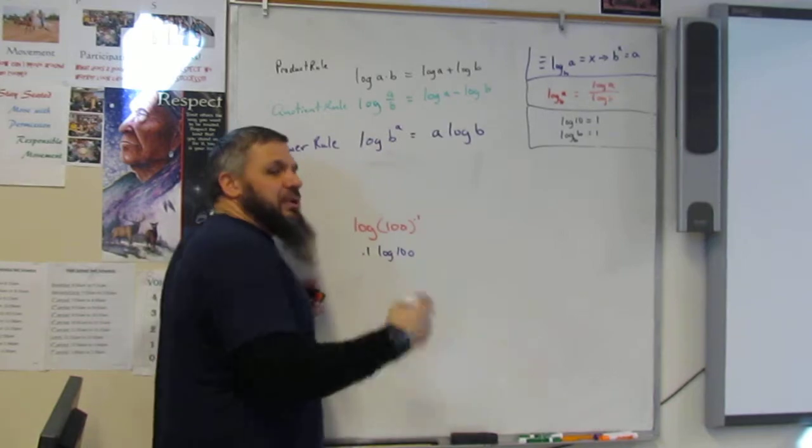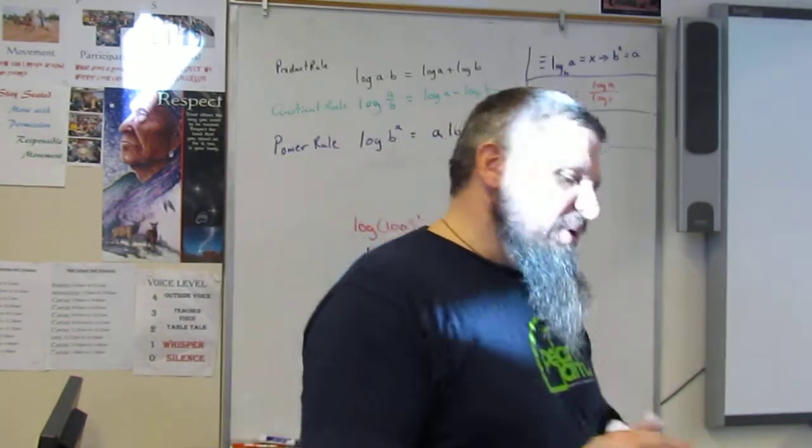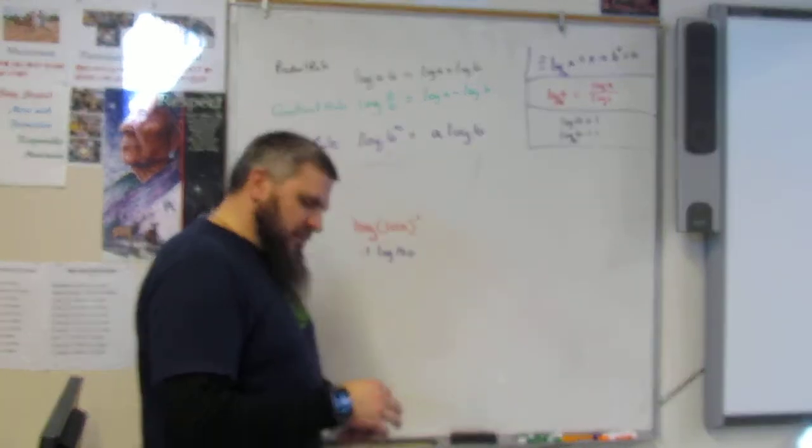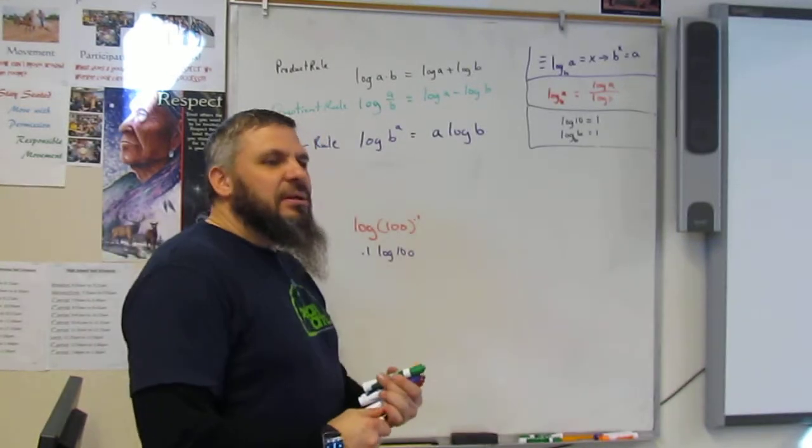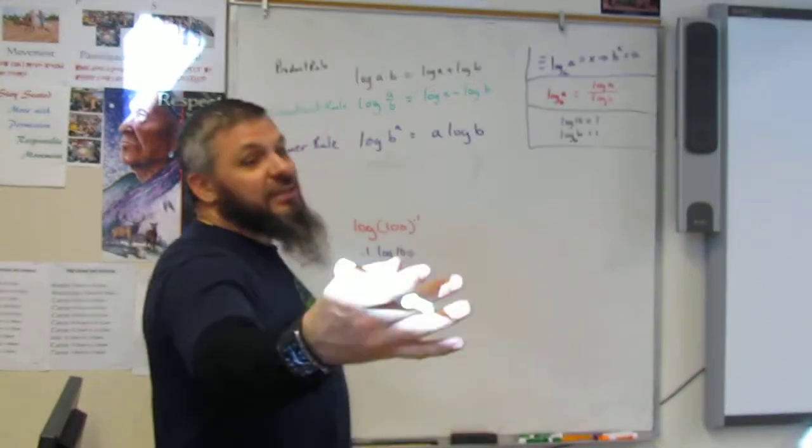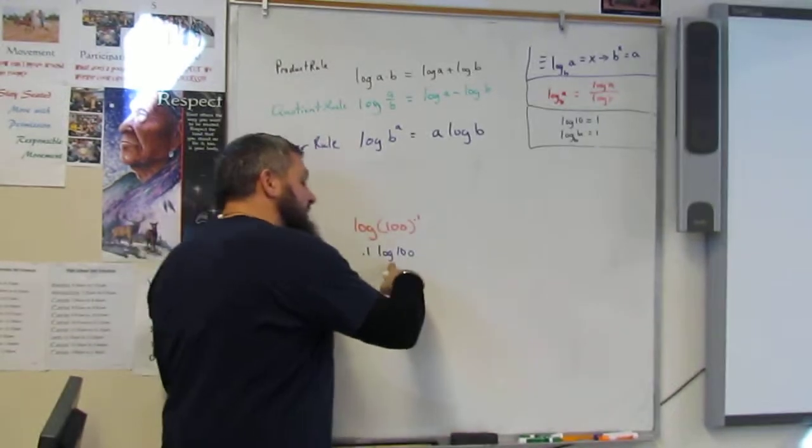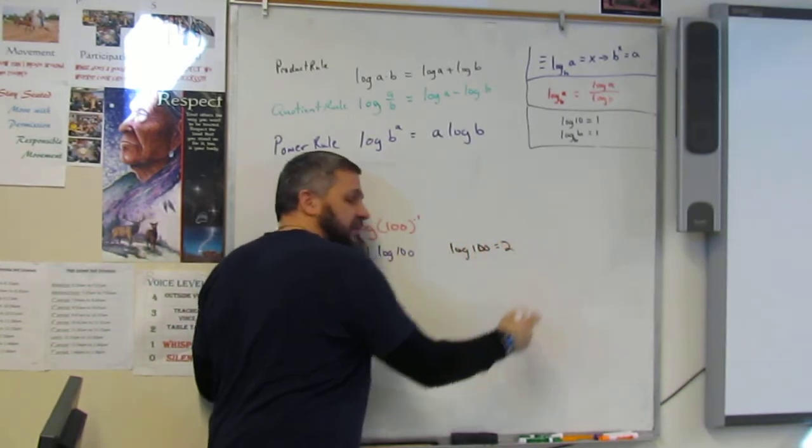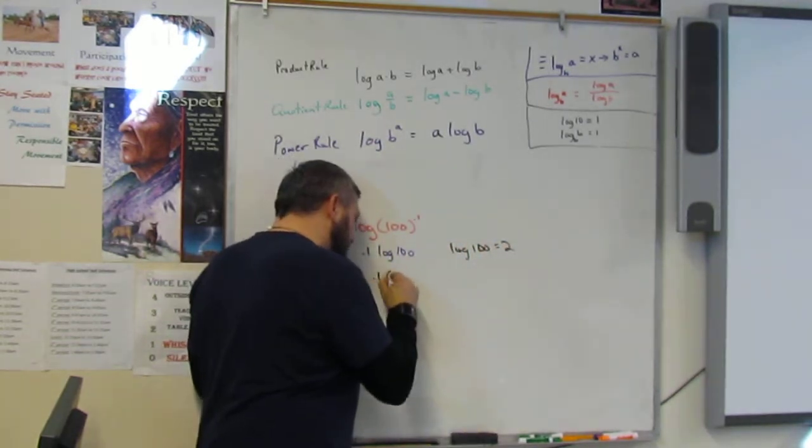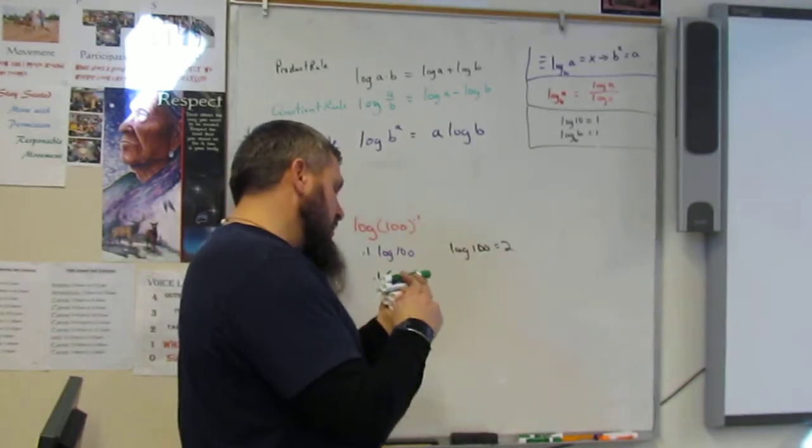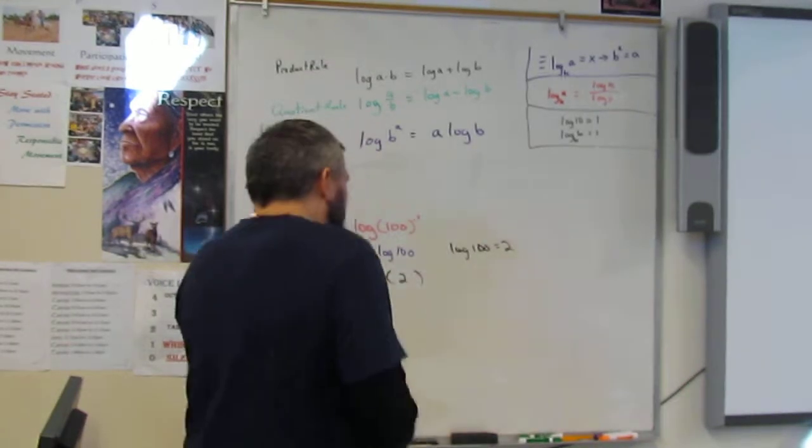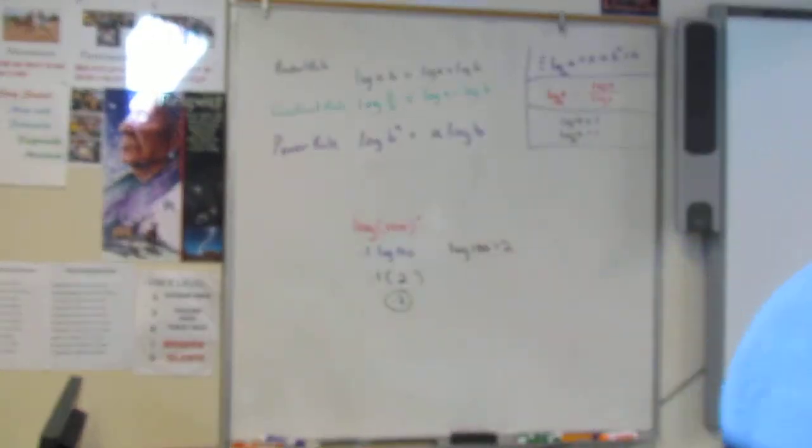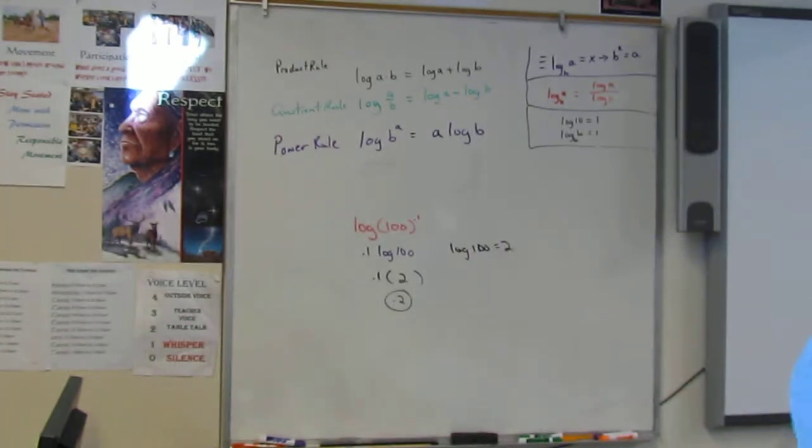0.1 times log of 100. Now on this one, they do want you to do it all the way. So think of it. What is 10 to what power is 100? 10 to the 2. 10 times 10 is 100, right? So that means that log of 100 is equal to 2. So then 0.1 times 2 equals 0.2. Done. Simple. Is this easy? Simple.